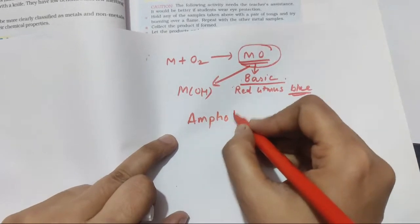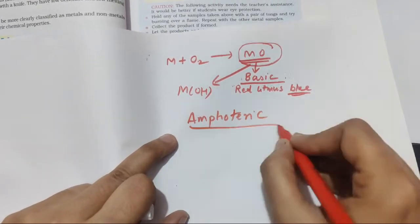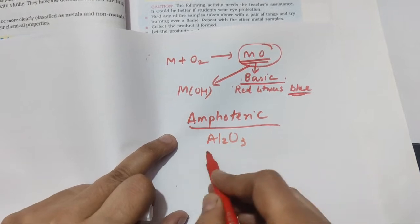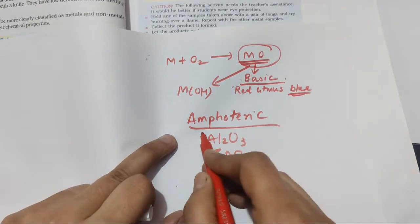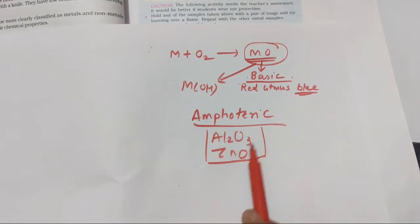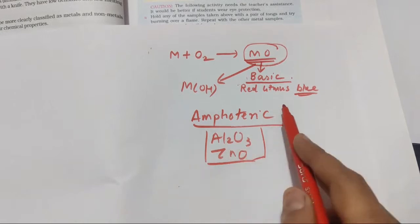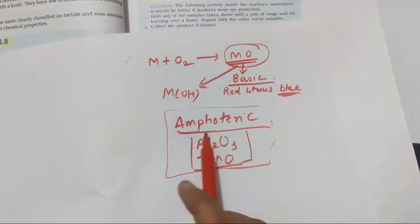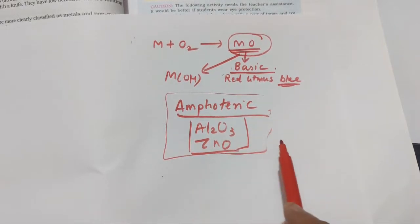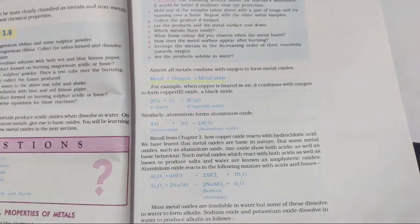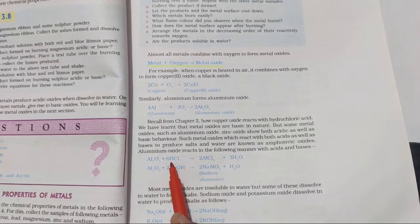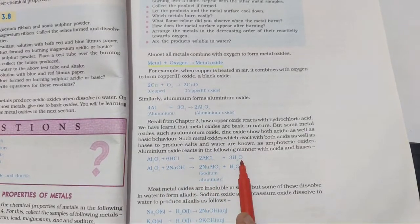An important example: name an amphoteric oxide. The answers are aluminium oxide (Al₂O₃) and zinc oxide (ZnO). These two are the important amphoteric oxides. The next important point from this topic: write the balanced equation for what happens when an amphoteric oxide reacts with an acid and when it reacts with a base. The reaction given in NCERT is: Al₂O₃ + 6HCl → 2AlCl₃ + 3H₂O.